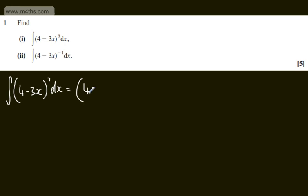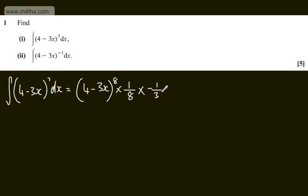So we're going to have 4 minus 3x — we raise by a power, we divide by the new power, which is the same as multiplying by 1 over 8. Then we divide through by the derivative of the inside function: the derivative of 4 minus 3x is minus 3, which is the same as multiplying by 1 over 3. Adding a constant of integration and tidying this up, we'll have minus 1 over 24 times the quantity 4 minus 3x to the power of 8 plus our constant of integration.